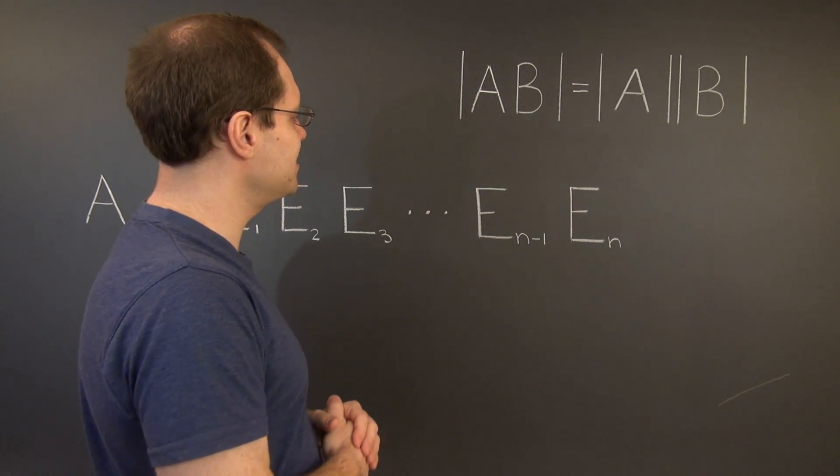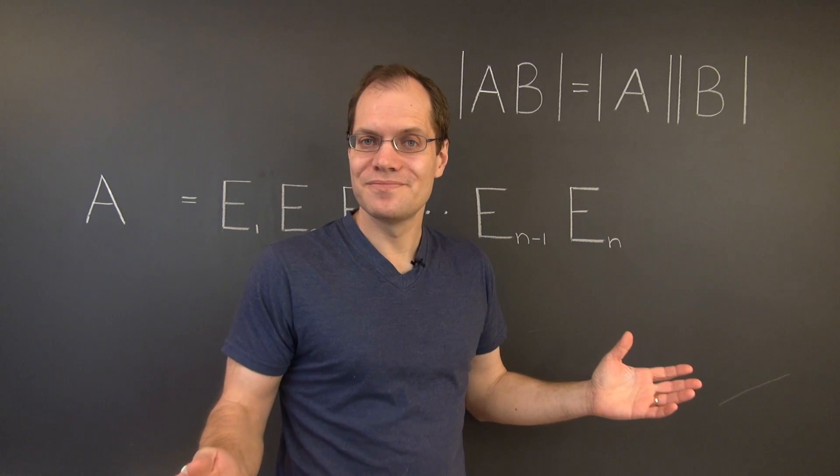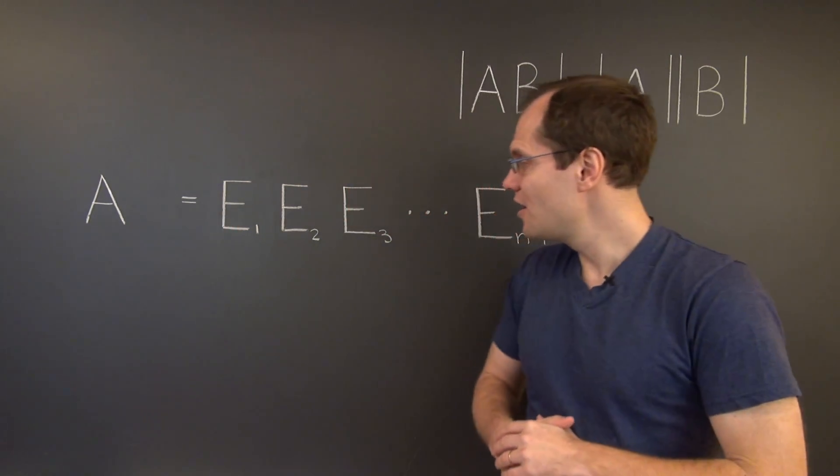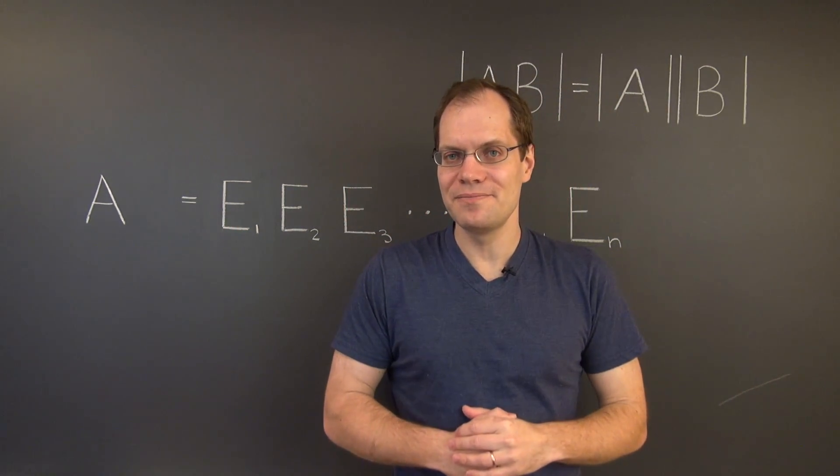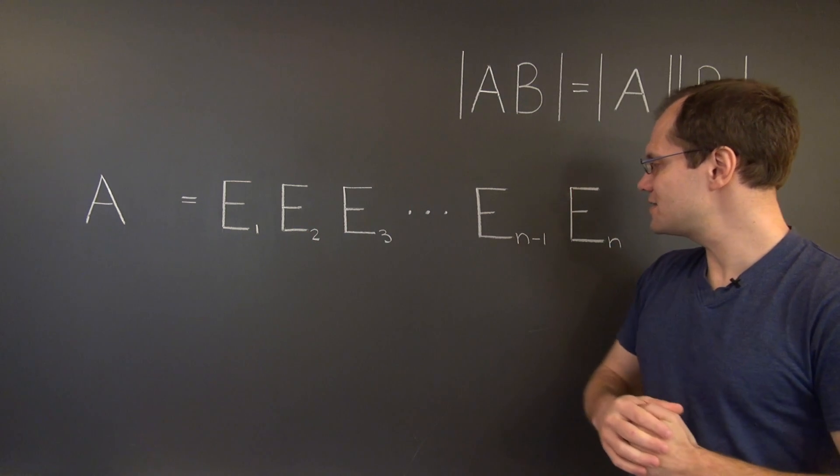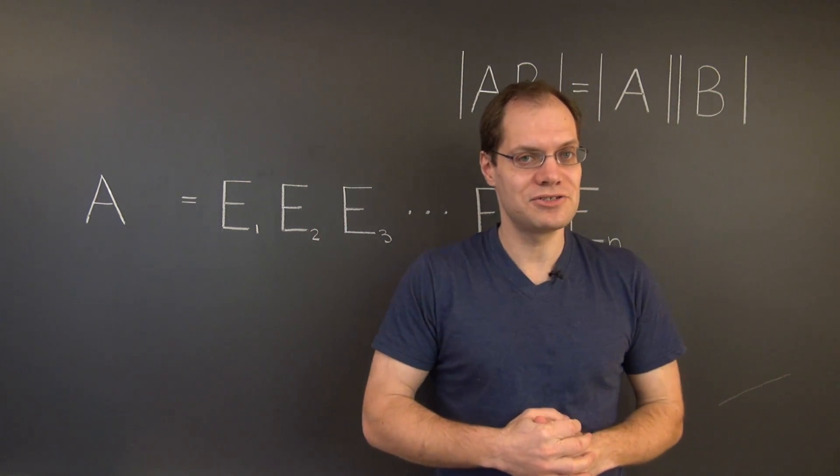And so both sides of this identity are zero. So we can concentrate on the case when A is non-singular and can therefore be represented as a product of elementary matrices.